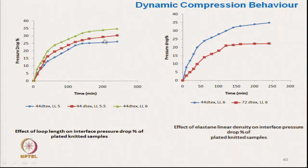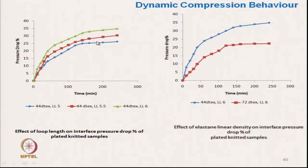Three different knitted fabrics were made. The blue one is made of 44 decitex filament with a loop length of 5, the red one has a loop length of 5.5, and the green one has a loop length of 6. The blue is the tighter structure and the green is the looser structure. The tight structure fabric shows less pressure drop, meaning it can retain pressure for longer time. To retain pressure in compression athletic wear, one should use a fabric with lower loop length.